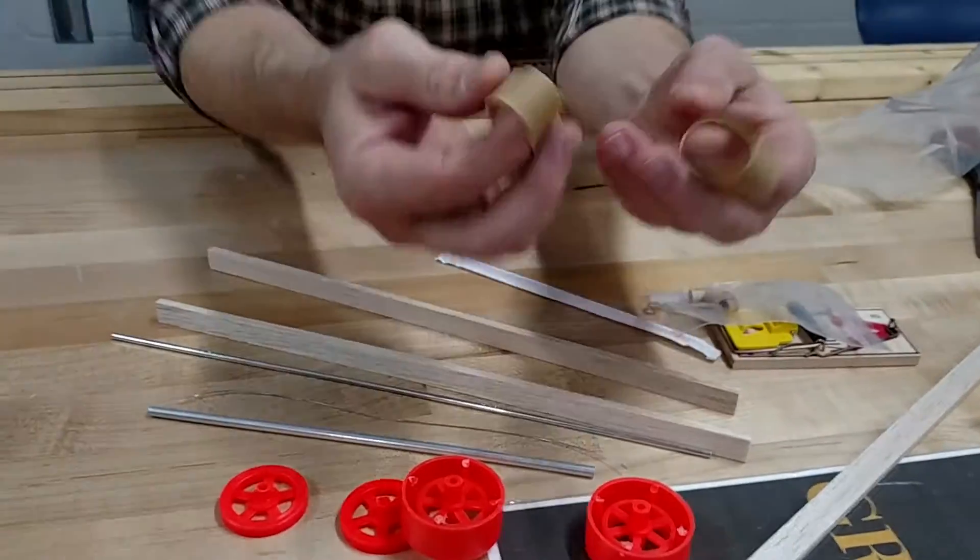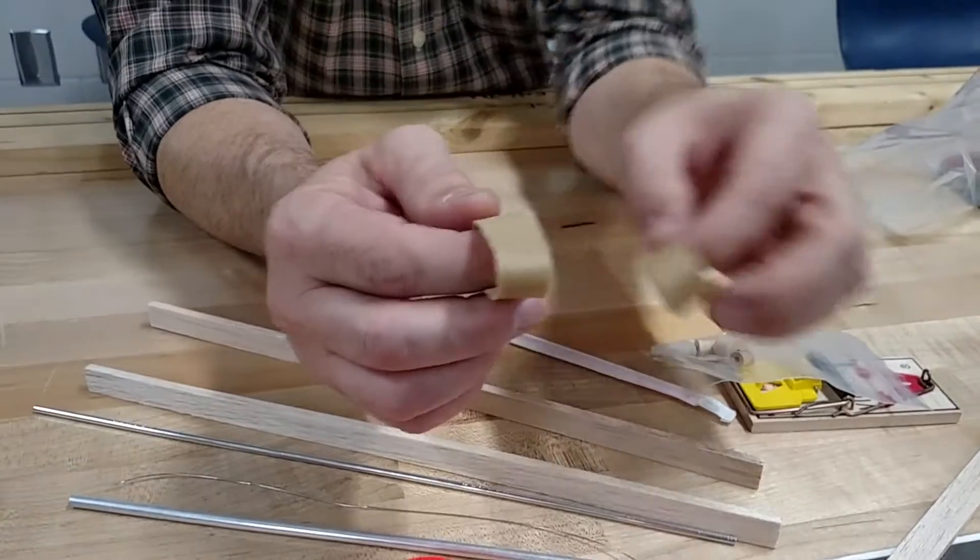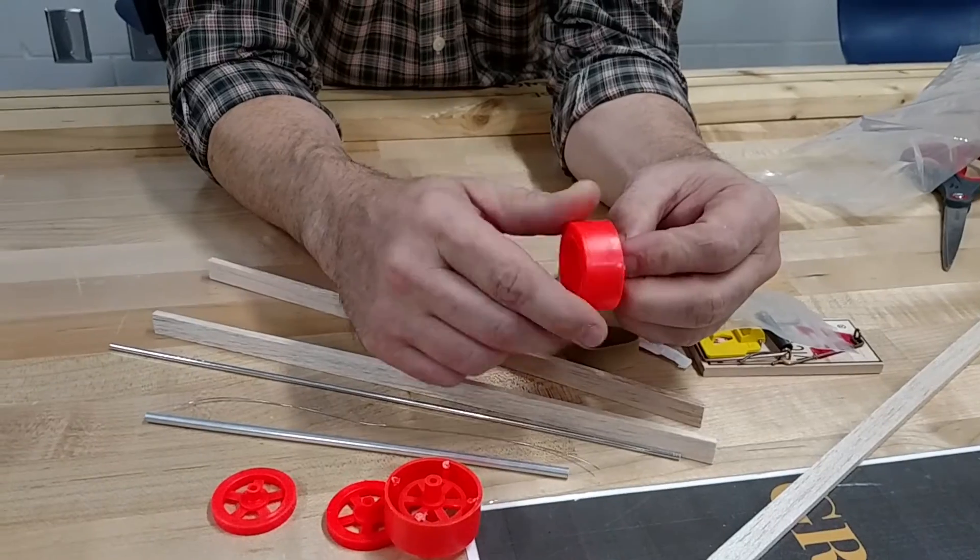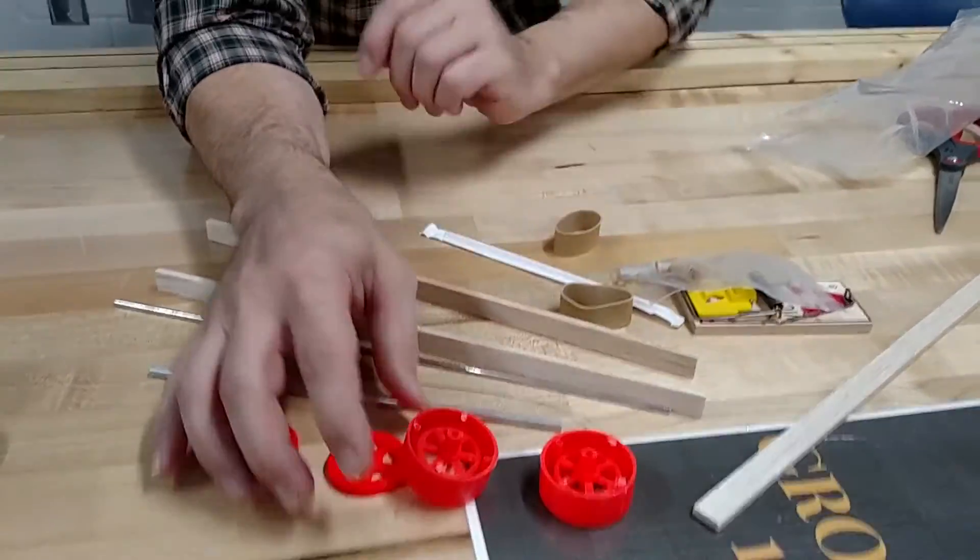And then the last thing is you have two rubber bands. And these rubber bands are to put on these back wheels so you get some traction instead of just spinning out on a smooth surface. And that's it.